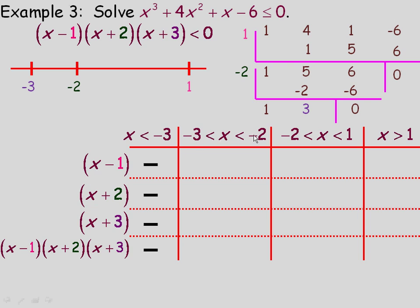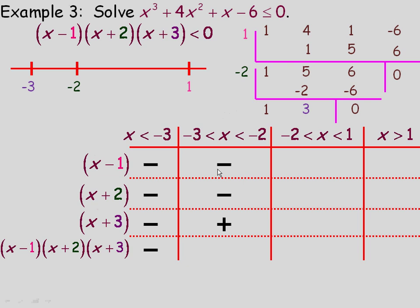For numbers between negative 3 and negative 2, there are no whole numbers, so I'll choose negative 2.5. Negative 2.5 minus 1 is negative 3.5 — negative. Negative 2.5 plus 2 is negative 0.5 — still negative. But negative 2.5 plus 3 is positive 0.5 — that factor switches to positive. So the product of a negative, a negative, and a positive is positive — a sign change from the previous interval.